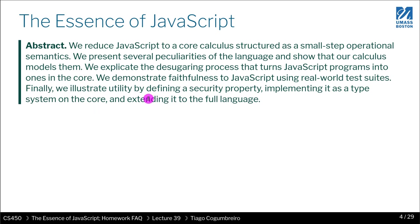I want to read the abstract just so you get a kind of baseline of what we're doing. So the authors reduced JavaScript to a core calculus.